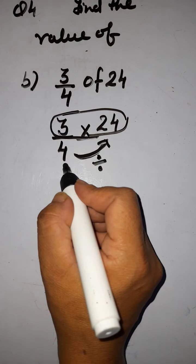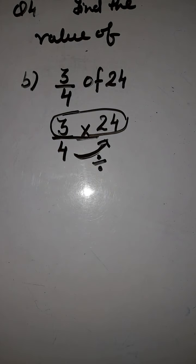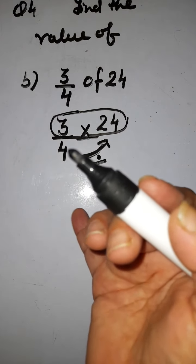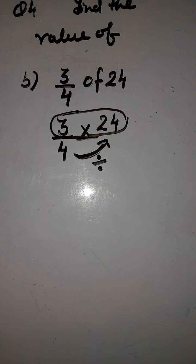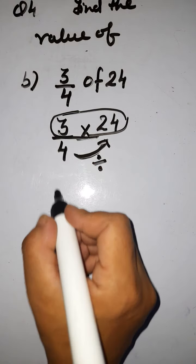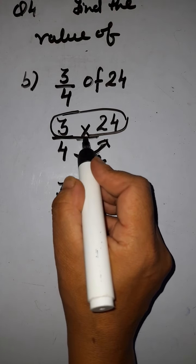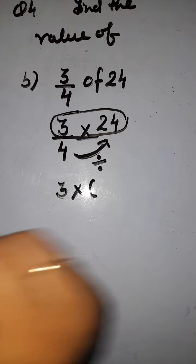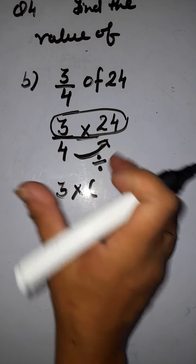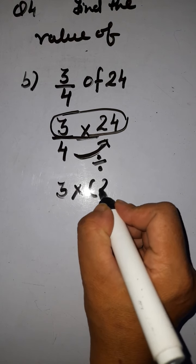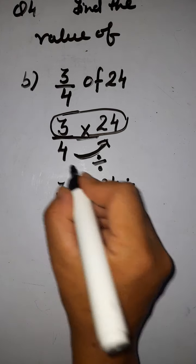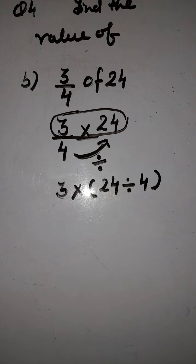और जो denominator होता है, उससे ही हम उस number को हमेशा divide करते हैं, और वो उस number से बड़ा होना चाहिए — greater than होना चाहिए, तब ही हम division कर सकते हैं. So how we'll write it: first of all we'll write three here, the next symbol is multiplication, now make a bracket — bracket बनाना जरूरी है क्योंकि आप पहले division solve करोगे. So we have here twenty-four and the division symbol, and here is four. Bracket close.